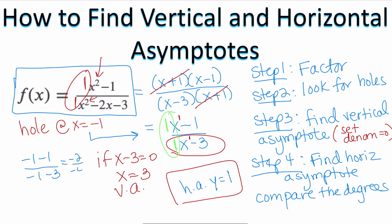If I say (-1 - 1)/(-1 - 3), I get -2/-4, which is positive one half. That means the ordered pair for my hole is the point (-1, 1/2).